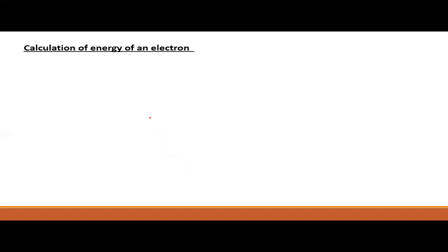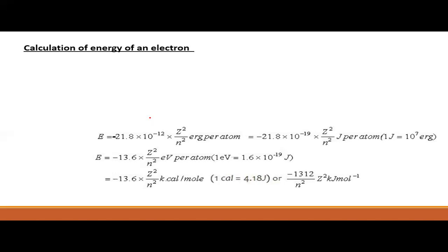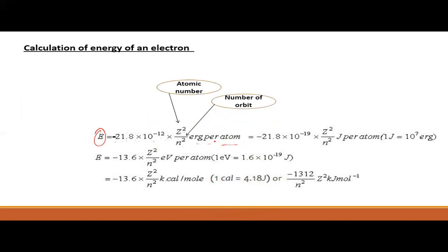Bohr also calculated the energy of an electron in each energy level. The formula is: E = −21.8 × 10⁻¹² × z²/n² erg per atom, where z is the atomic number and n is the number of orbit or energy level. Converting to Joules, the value becomes −21.8 × 10⁻¹⁹ Joule per atom. In terms of electron volts, the value is −13.6 × z²/n² eV.